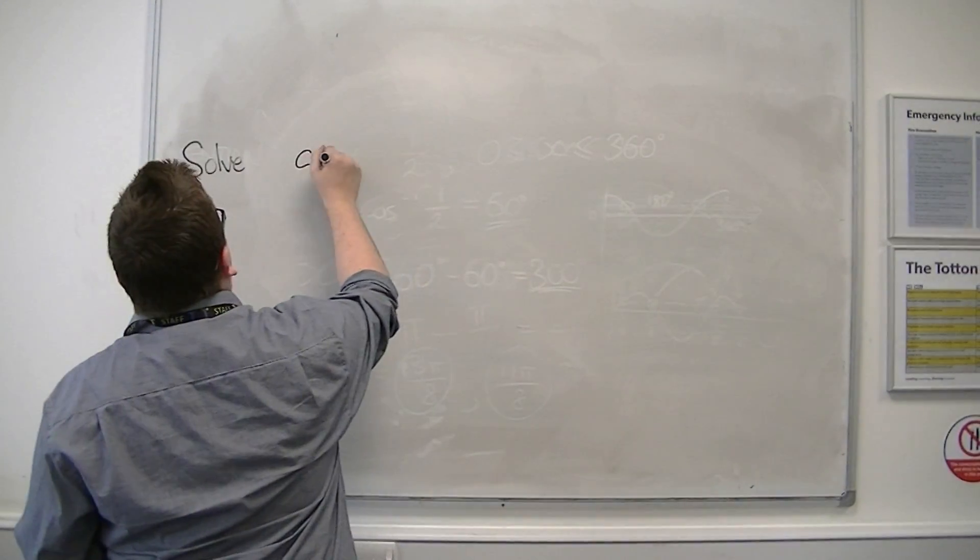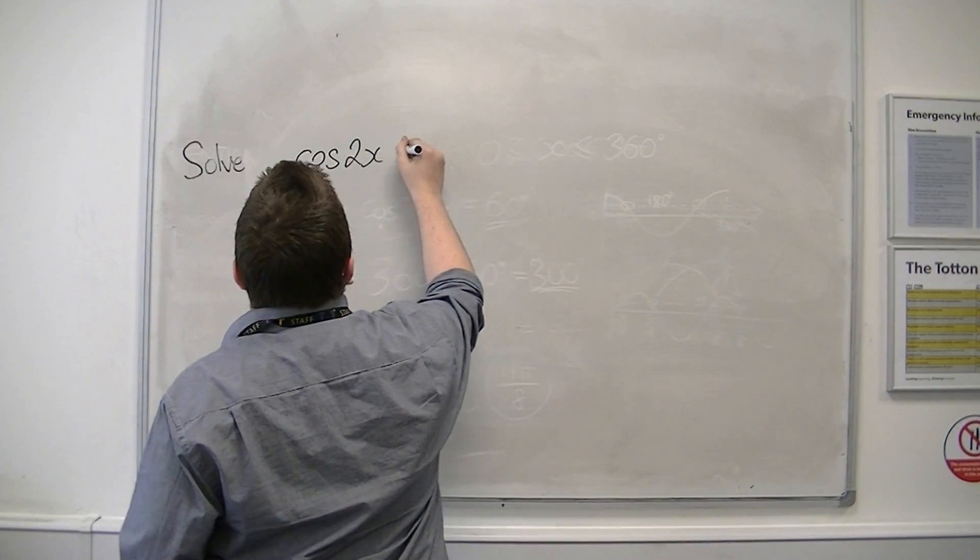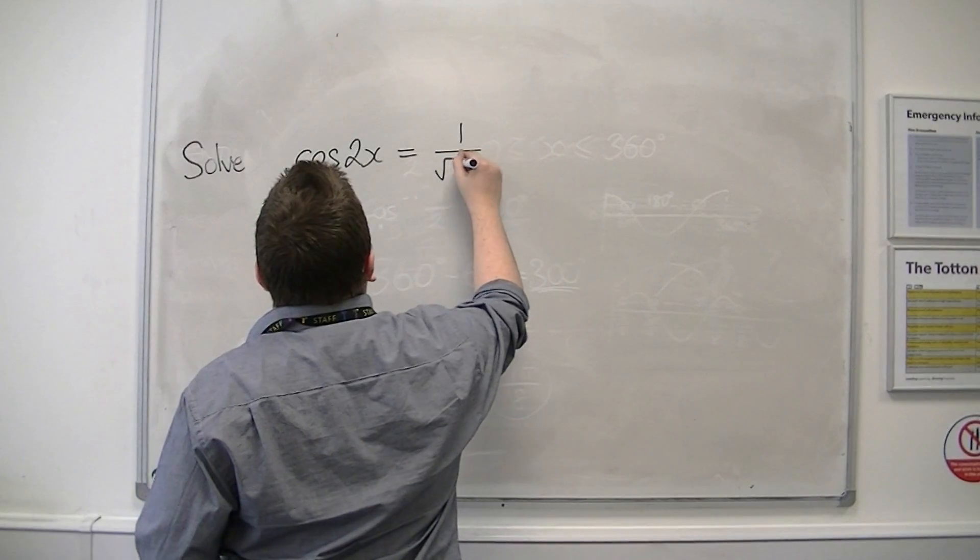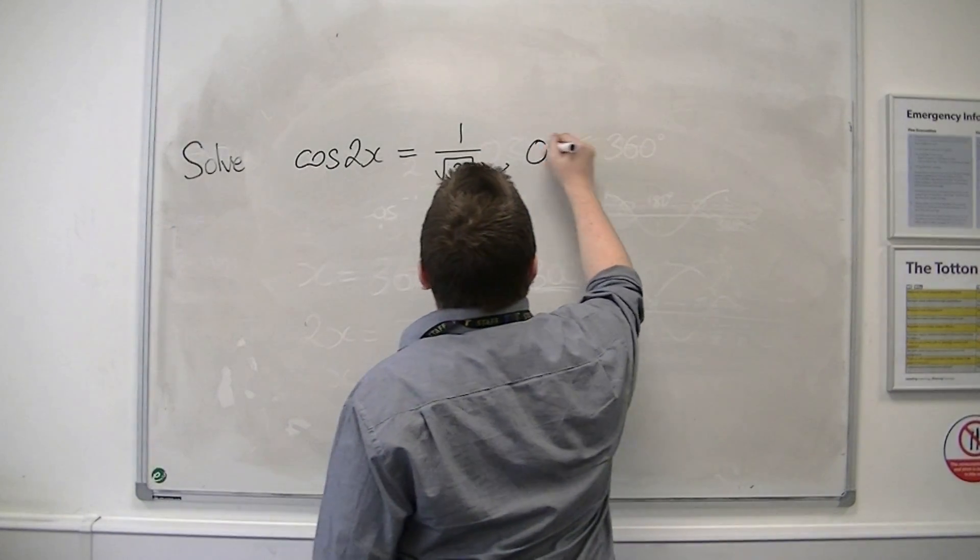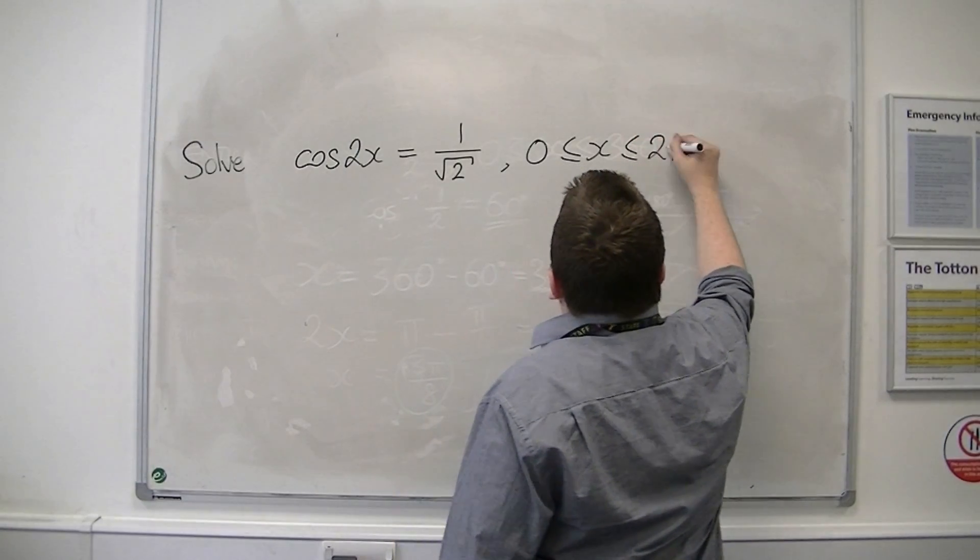We're going to look at solving cos of 2x is equal to 1 over root 2. Very similar to the first video, what we did. I want to show you how it works for cosine. And this time I'm going to be in radians.